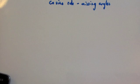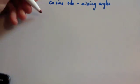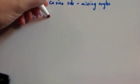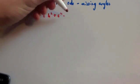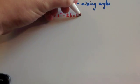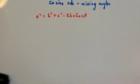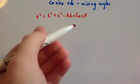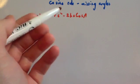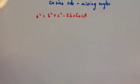The cosine rule can be used to find missing angles as well. Remember the cosine rule was a² = b² + c² - 2bc cos A. If you want to find out what the angle is, you're going to rearrange this to make cos A the subject. If you know three sides you can work out the angle.